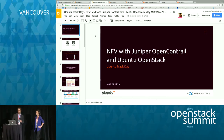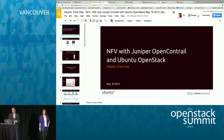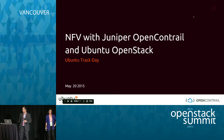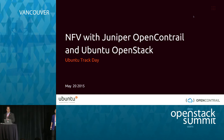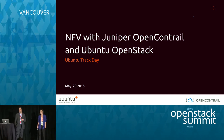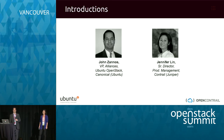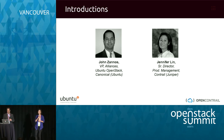Thank you for making time today. This is the canonical track session on NFV, SDNs, Ubuntu, OpenStack, Juju, and a combination of Canonical and Juniper. I'm John Zanos with Canonical. I manage our alliance organization, which also includes our team focused on telecom as well as our SDN partnerships. And I'm Jennifer Lin. I lead the product management team with Contrail at Juniper Networks.